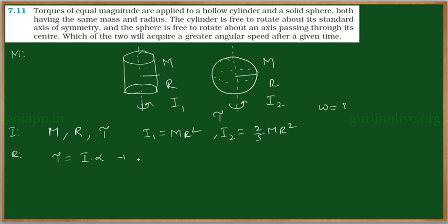But we are applying the same torque. So, these two should be equated: I₁α₁ is equal to I₂α₂, where α₁ and α₂ are the angular accelerations of these two bodies.